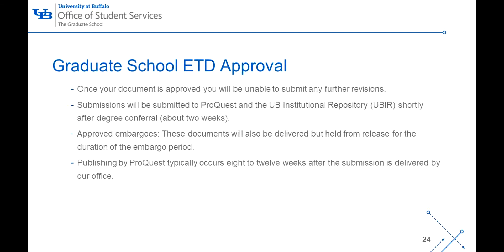Once your document is approved, you will be unable to submit any further revisions. Submissions are delivered to ProQuest and the UBIR shortly after degree conferral, usually in about two weeks. Documents with approved embargoes will also be delivered but held from release for the duration of the embargo period. Publishing by ProQuest typically occurs 8 to 12 weeks after the submission is delivered by our office. If you have purchased a bound copy from ProQuest, it may take an additional four weeks beyond the publishing date.